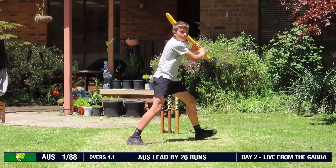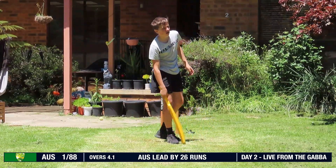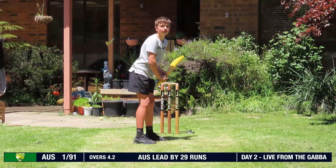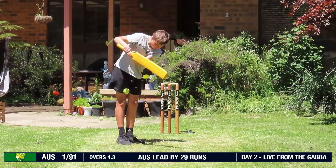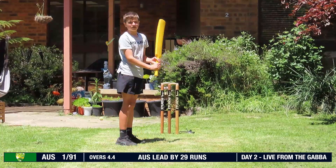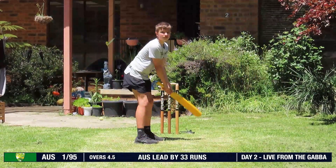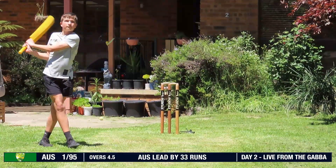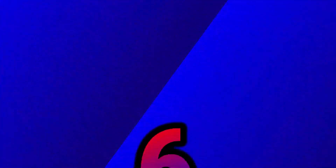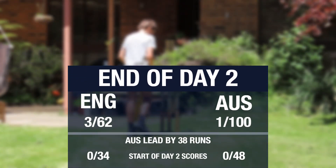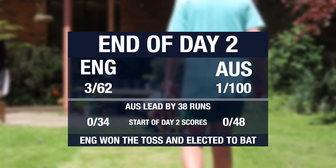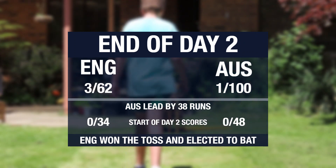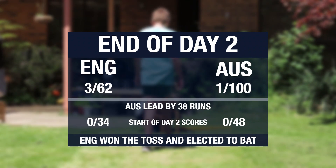They've still got two wickets in hand and only five balls left in the game, so they need to start smacking. Goes for a three, that's gone through him. Australia lead by 29 runs, currently one for 91, two balls remain. And that's been smoked down the ground for a four. Last ball is a six! At the end of day two, England were all out for 62, Australia one for 100, Australia lead by 38 runs. England won the toss and elected to bat first.